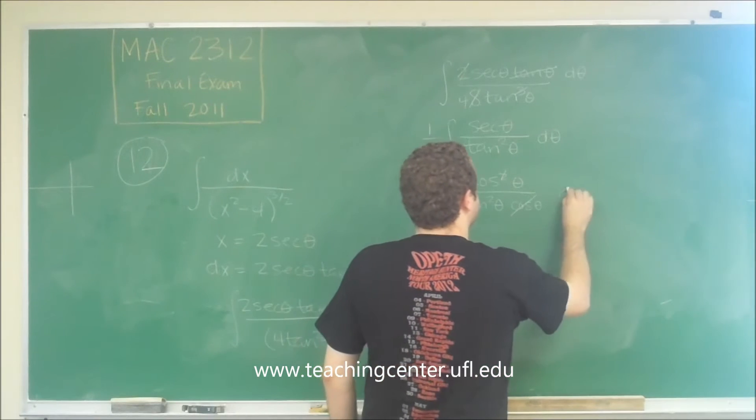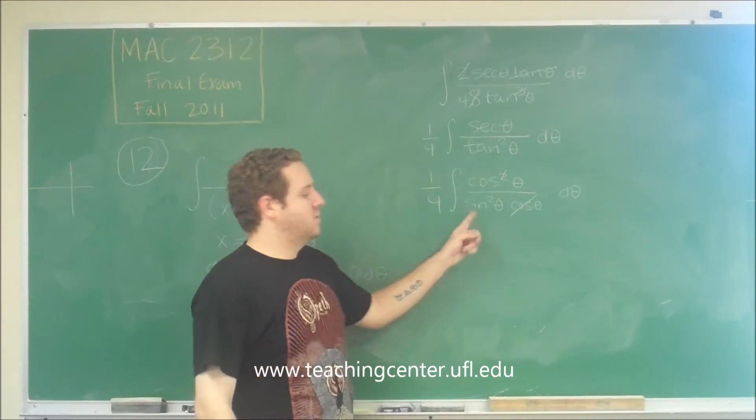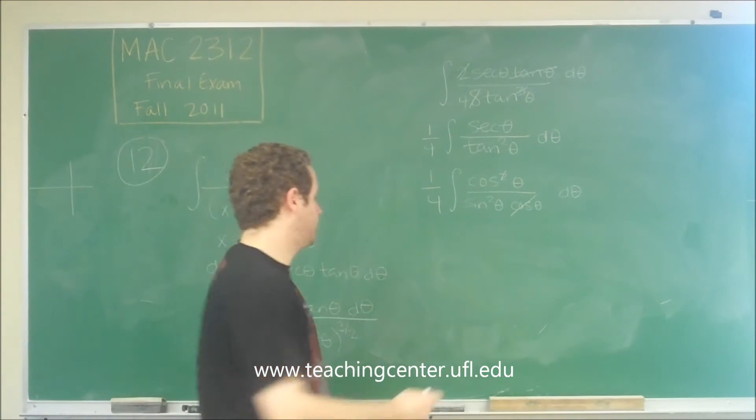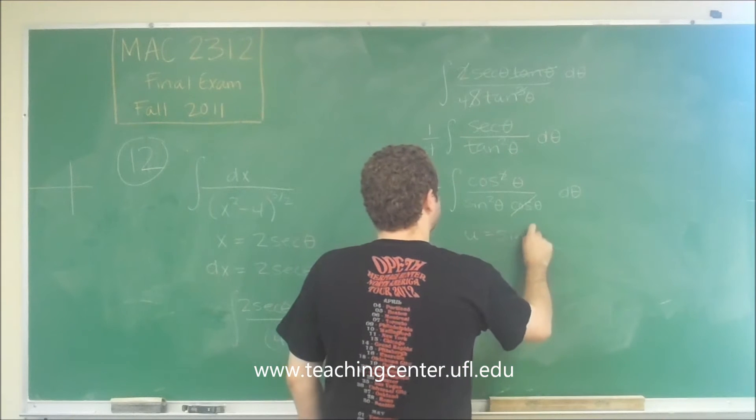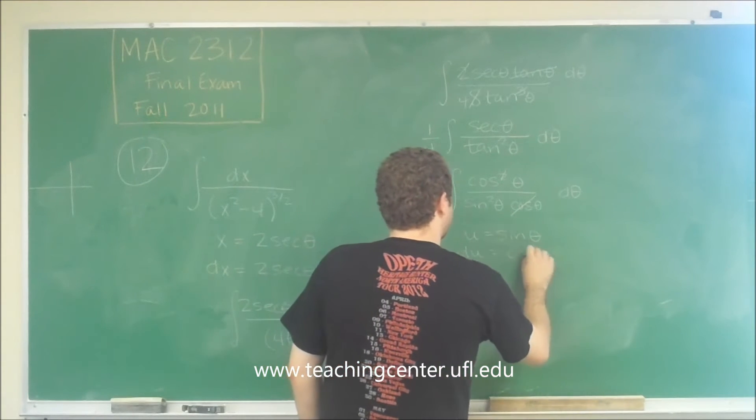So you can see one of these cosines is going to cancel out. And if we just have cosine over sine squared, we can do u substitution where u is sine theta. So we want to say u equals sine theta. Therefore, du equals cosine theta d theta.